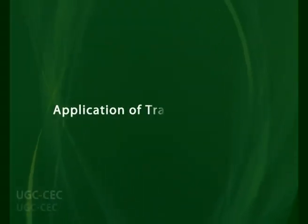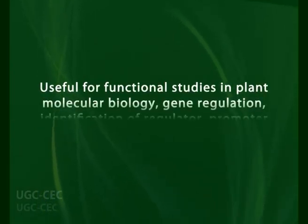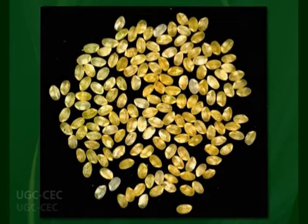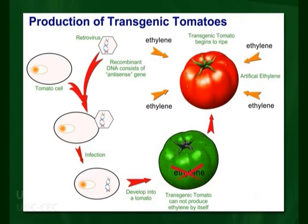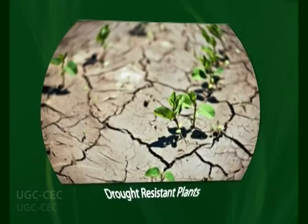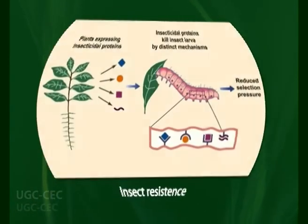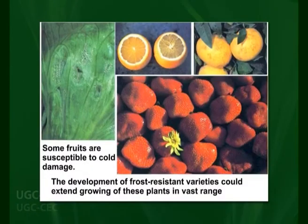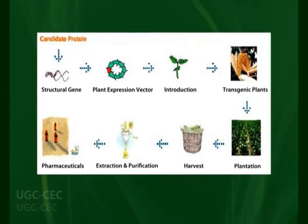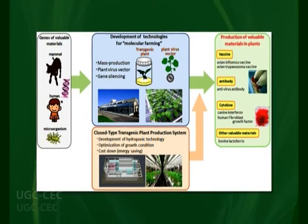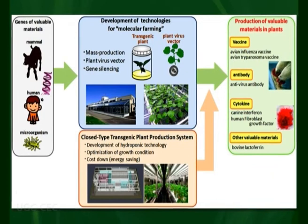Transgenic plants are useful for functional studies in plant molecular biology, gene regulation, and identification of regulatory and promoter sequences of genes. Secondly, they are useful for crop improvement, developed for important traits of agronomic and economic importance. Thirdly, transgenics are developed that are resistant to abiotic stresses such as drought and salt, and biotic stresses such as pathogens. Fourth, transgenics are developed for high yield and improved quality. Fifth, transgenics are developed which produce biochemicals not normally found in plants. Sixth, transgenic plants are developed for vaccine production — also called molecular farming.